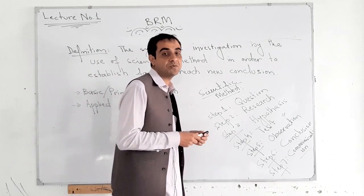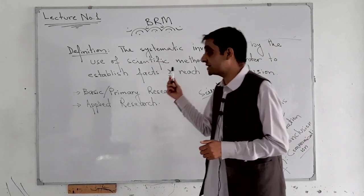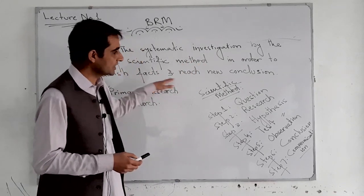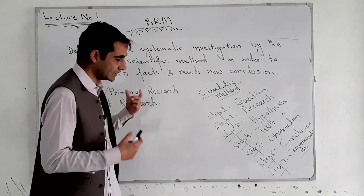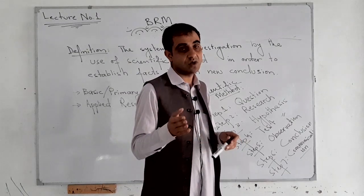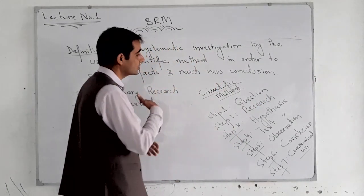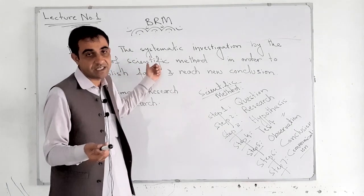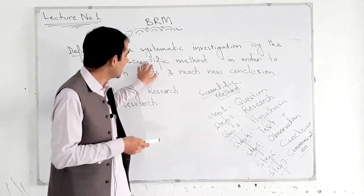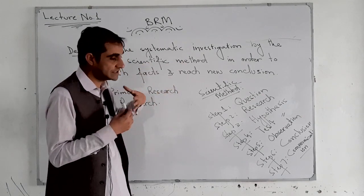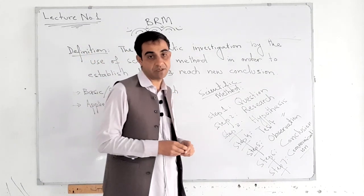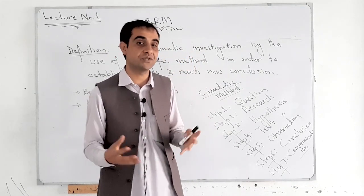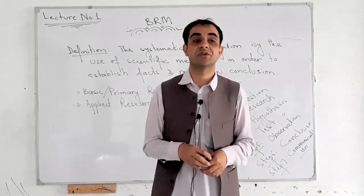How we are reaching to the conclusion? How we are finding solution for that specific problem? Obviously, we are using a method which is called scientific method, a logical and valid method in order to establish facts and reach new conclusions. In research, we are having a problem, a phenomena, and we want to reach new conclusions or find out solution about that specific problem using the scientific method. That overall scientific process or methodology is called research.